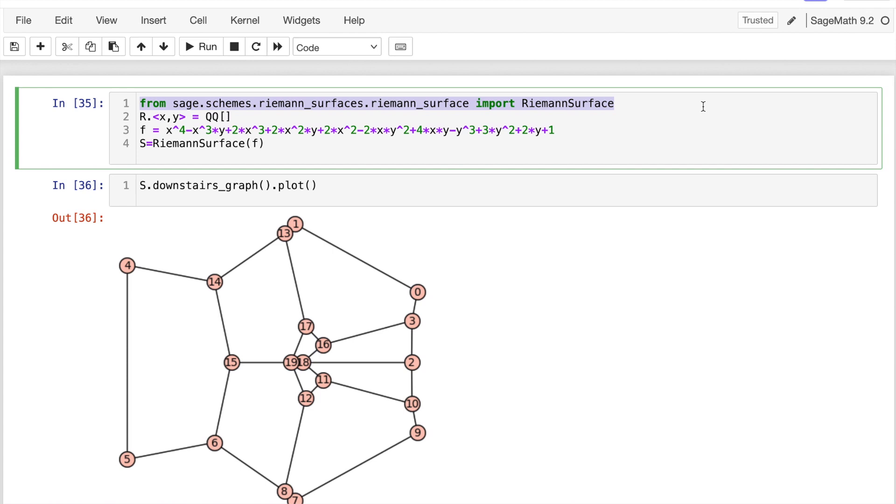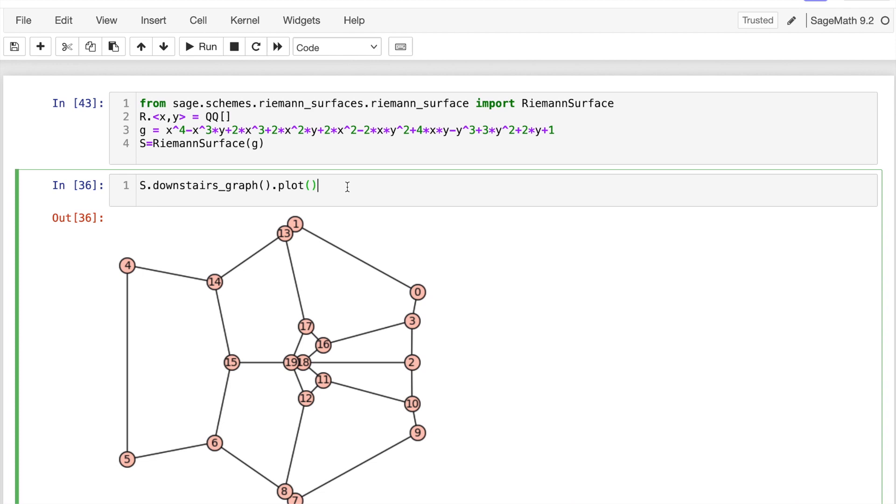They explain to you the syntax for calling the package Riemann surface. Once you import it and you write down an affine polynomial in two variables, this will be the equation defining our curve. I called it g, maybe I called it g. I just took this from their documentation. It creates an object called Riemann surface.